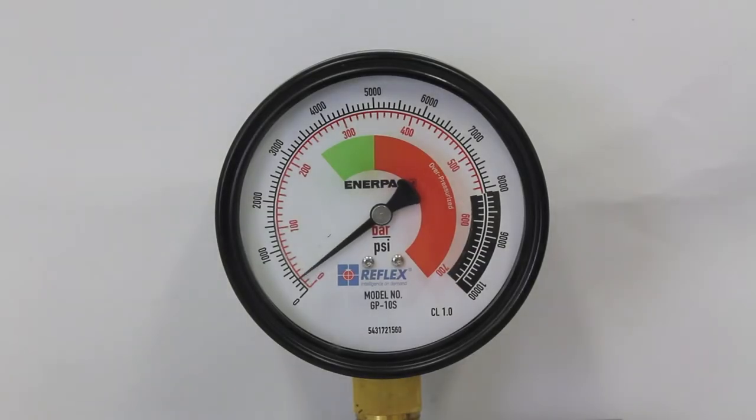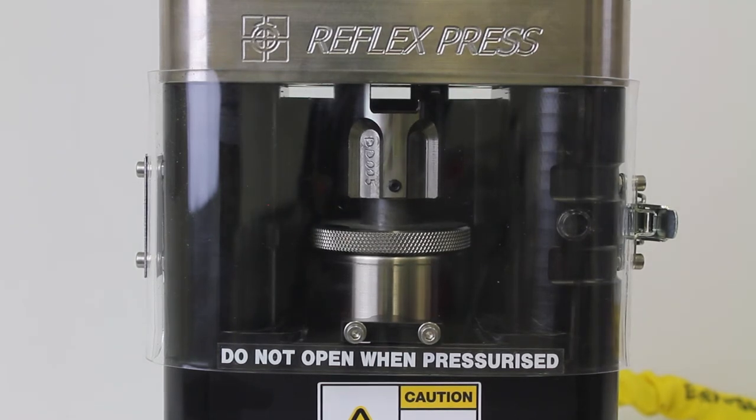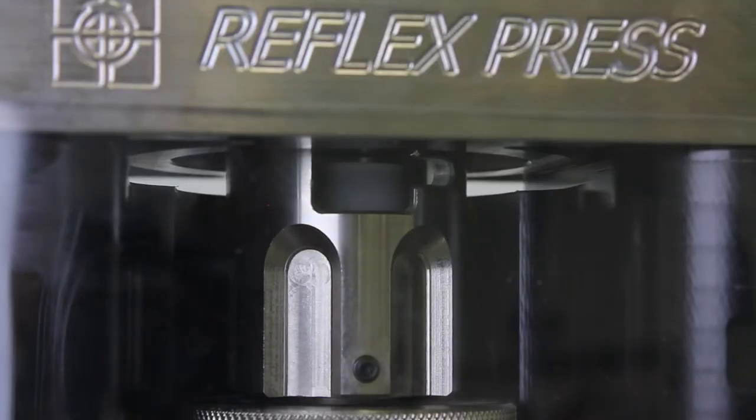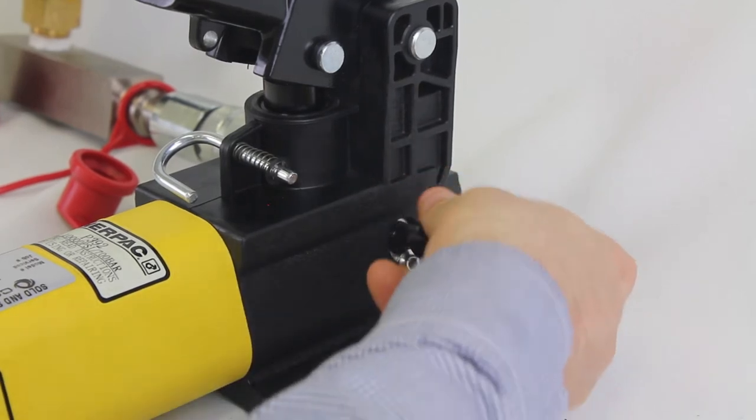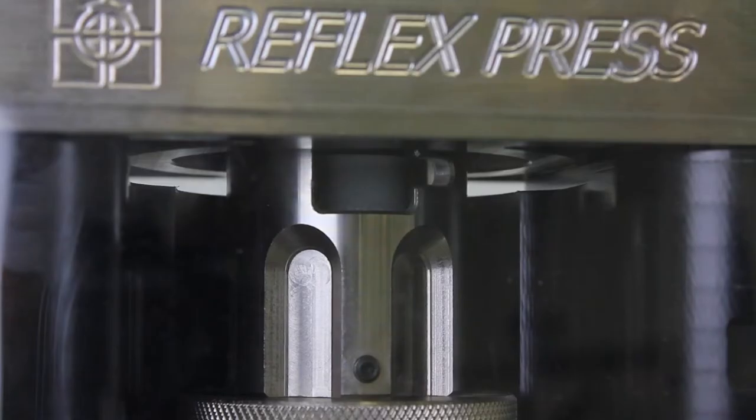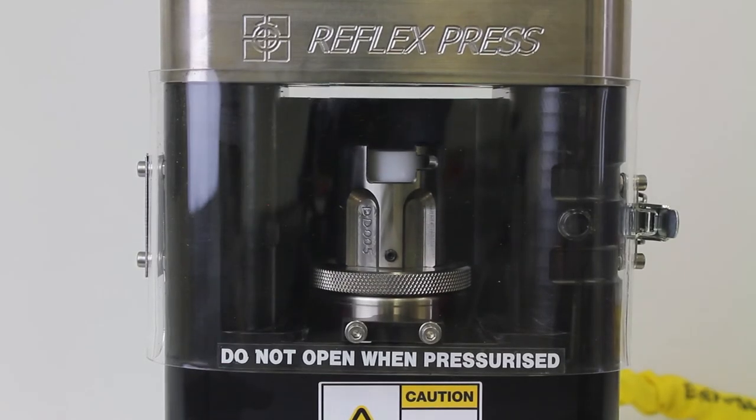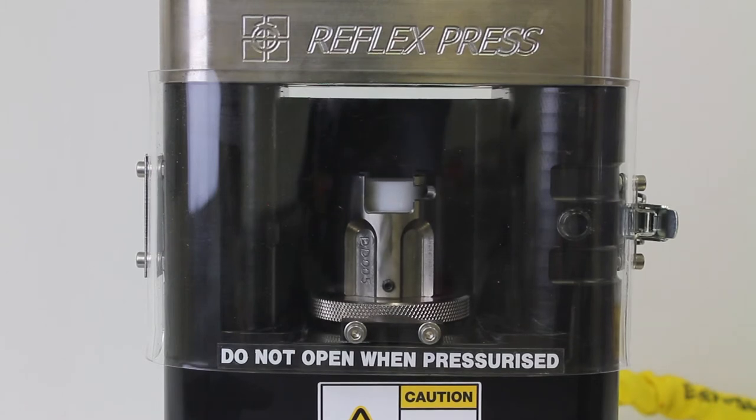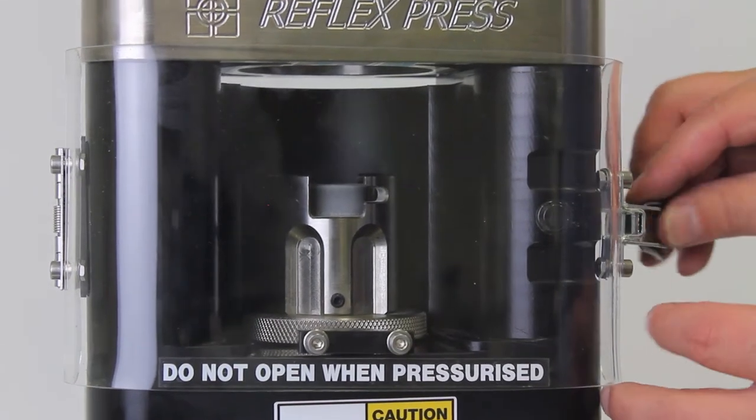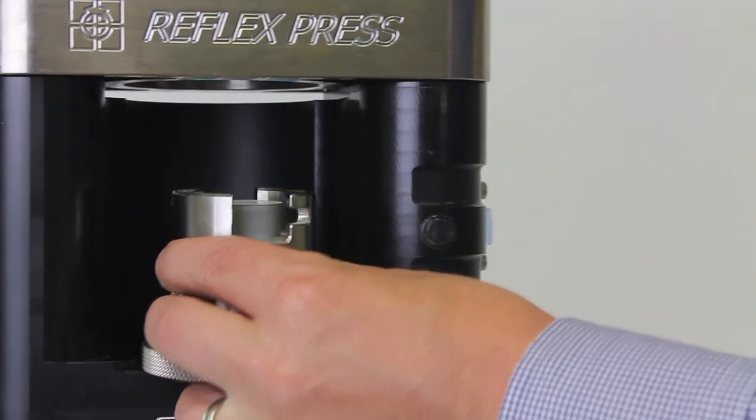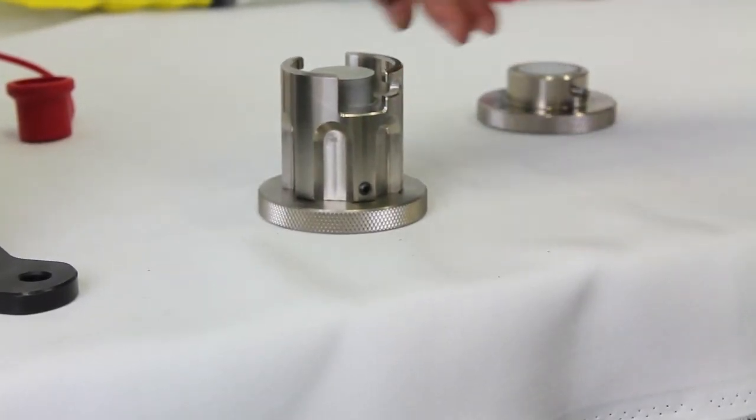During this process, observe the pressure gauge. The pressure should not exceed a few hundred psi. If it does, check everything is in order before continuing. Once the sample is completely free of the die, open the pressure relief valve. Once the cylinder is fully retracted, remove the die. Remove the sample, clean, and repeat.